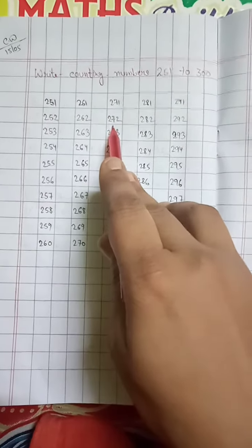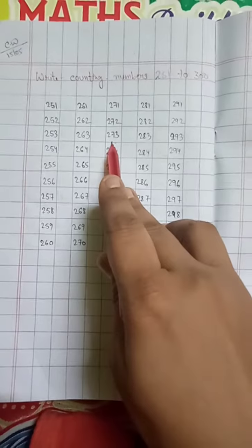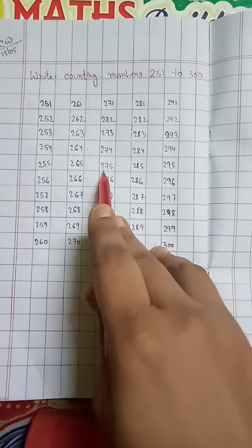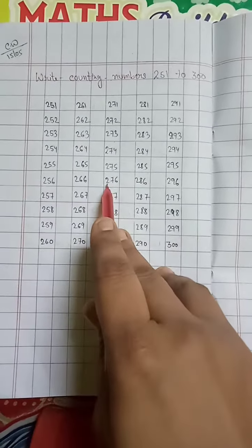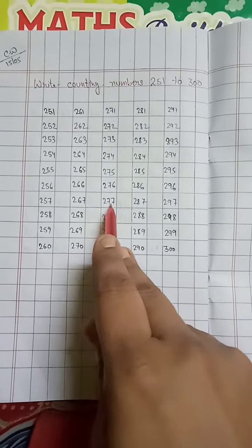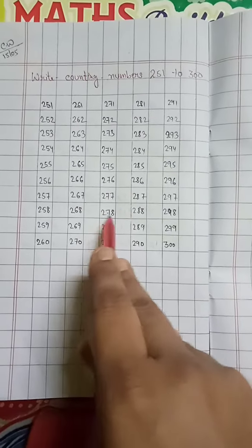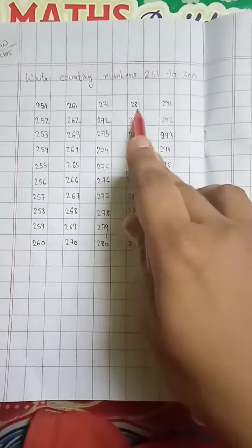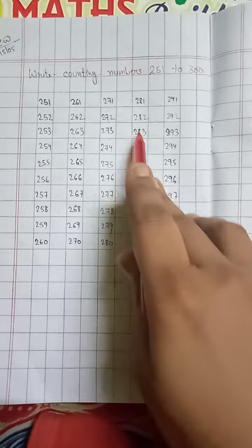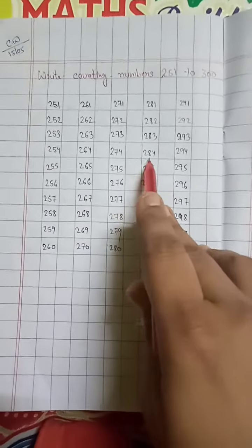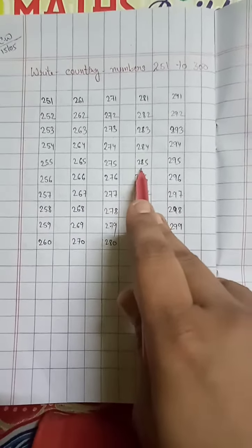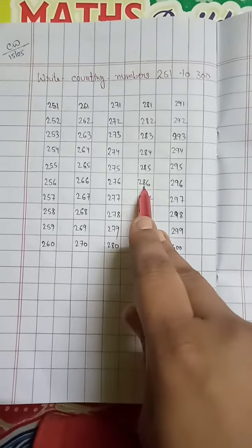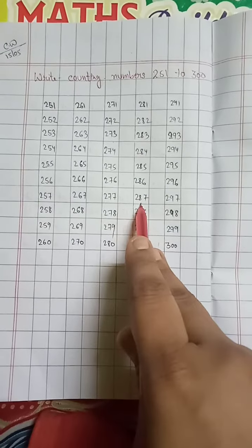271, 272, 273, 274, 275, 276, 277, 278, 279, 280, 281, 282, 283, 284, 285, 286, 287.